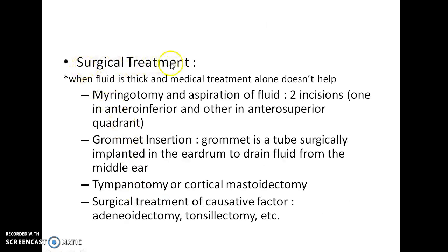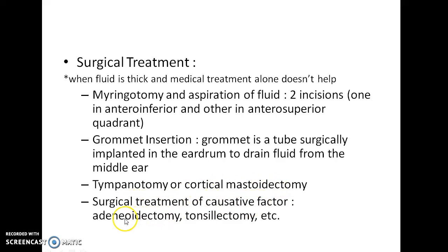Surgical treatment is indicated when fluid is thick and medical treatment alone doesn't help. Myringotomy and aspiration of fluid is done by placing two incisions, one in the antero-inferior and another in the antero-superior quadrant. Grommet insertion can be done — a grommet is a tube surgically implanted in the eardrum to drain fluid from the middle ear. Tympanotomy or cortical mastoidectomy can also be performed. Surgical treatment of the causative factor, like adenoidectomy or tonsillectomy, can also be done.